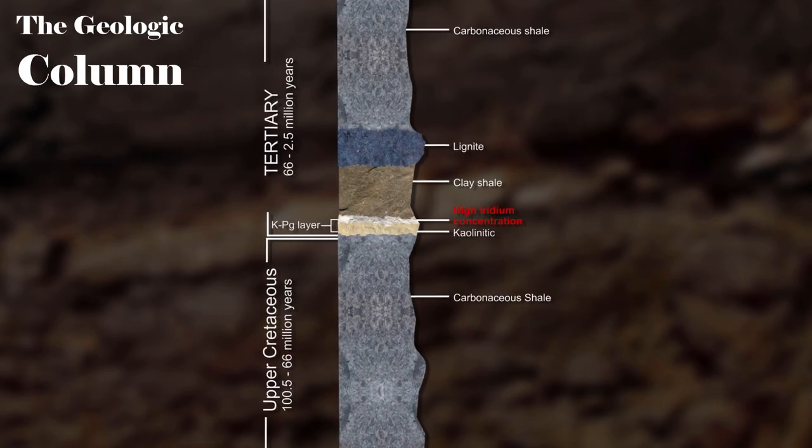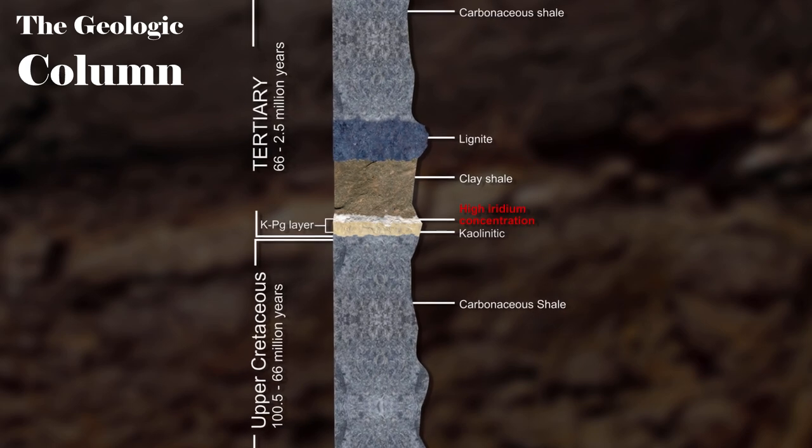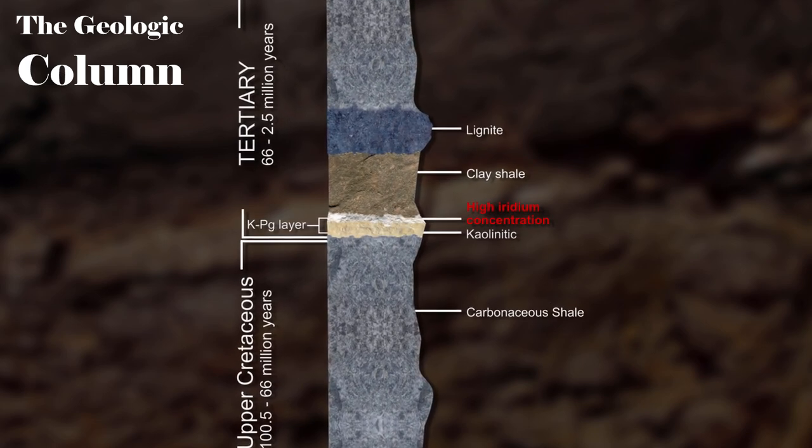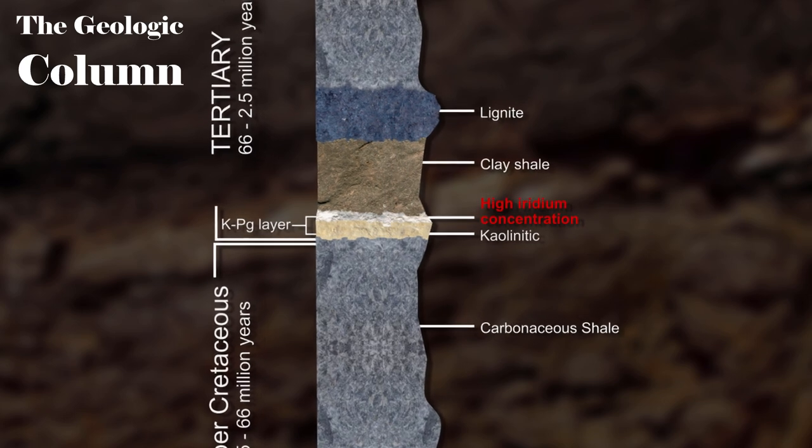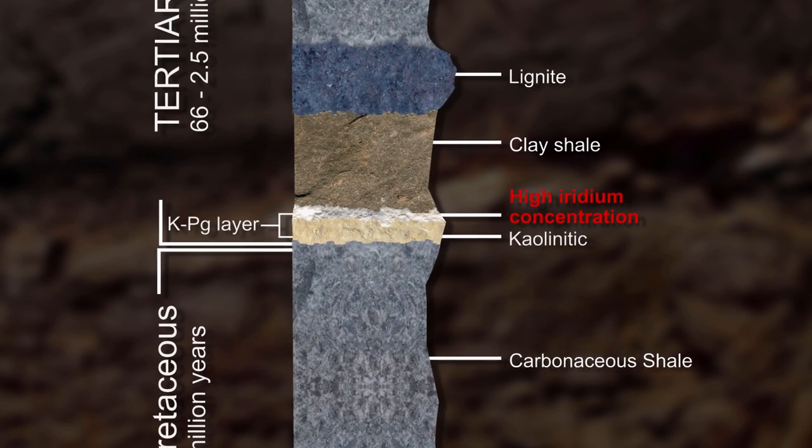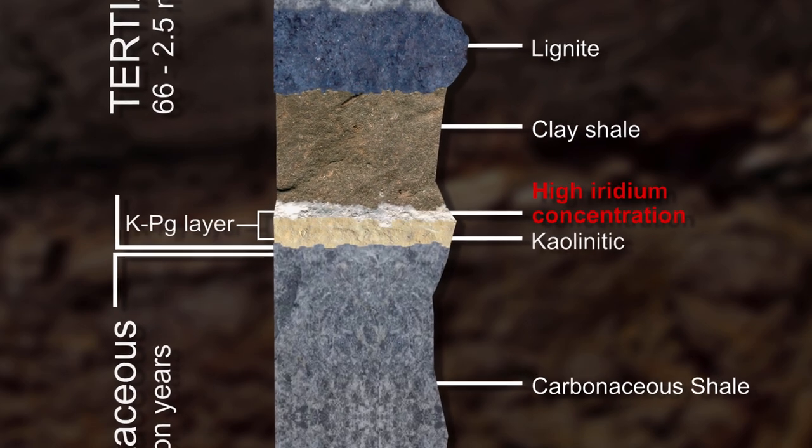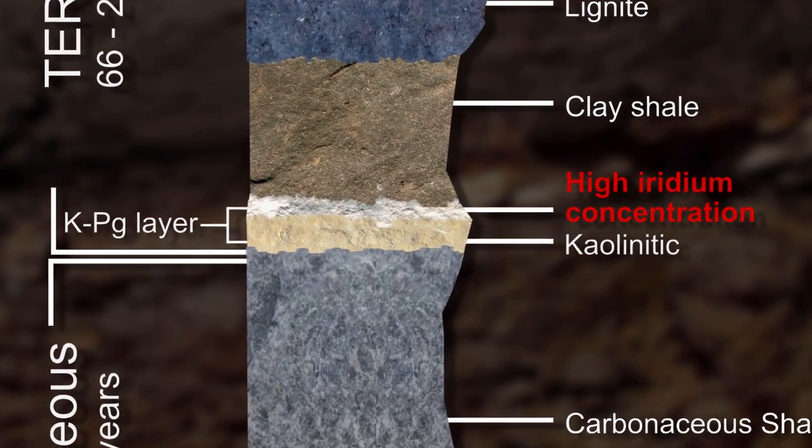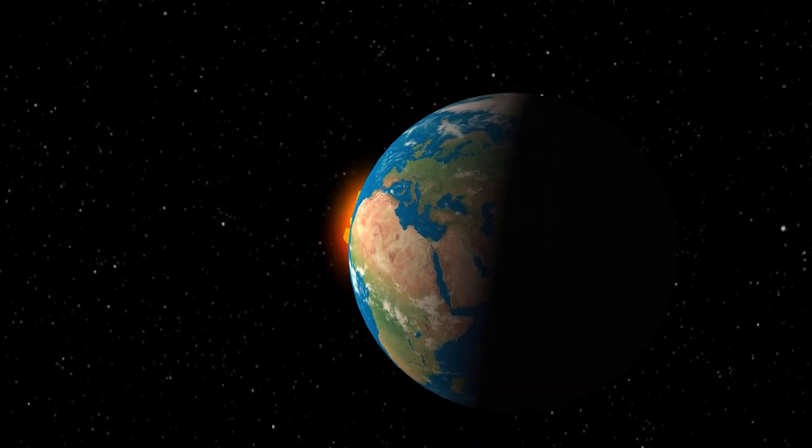Each layer represents a distinct period in time. On Earth, the KPG or KT boundary contains a much higher concentration of iridium than other layers. The existence of this boundary supports the idea of a major asteroid impact at that time.